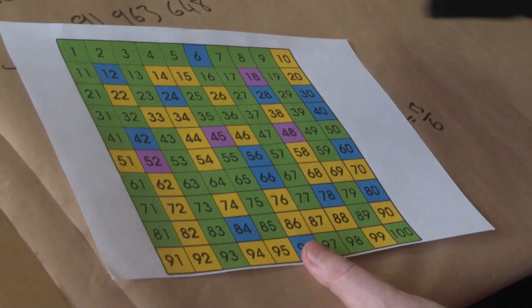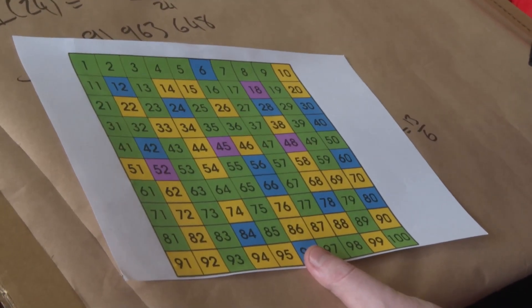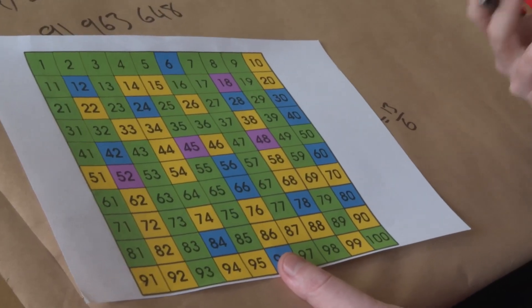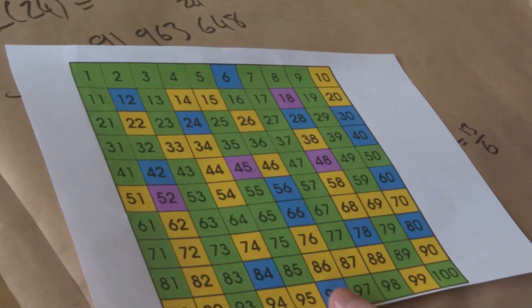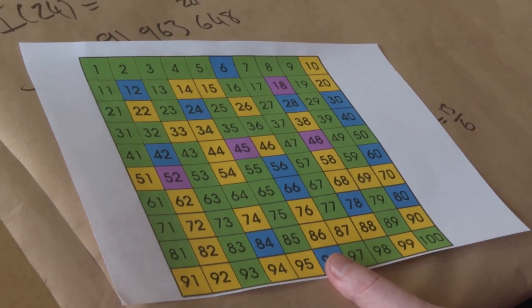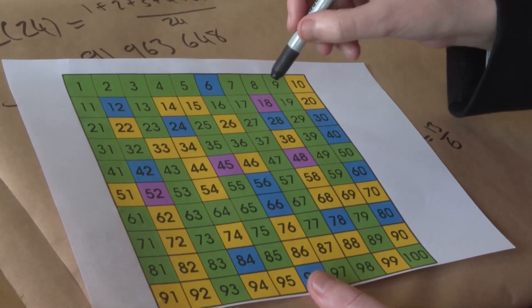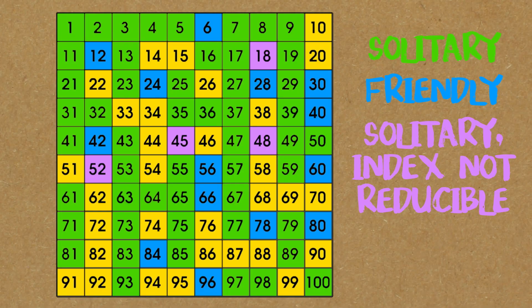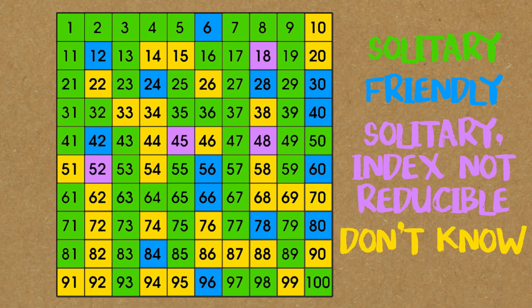Let me show you which numbers are solitary and which ones are friendly. The friendly numbers are marked in blue — 6 is a perfect number and we know that means it's friendly, along with 12, 24, and 28. The solitary numbers are marked in green: your primes, prime powers, and numbers that don't share factors with that sum. Some special ones — 18, 45, 48, 52 — are solitary but not prime, not prime powers, and don't have that special rule; we've worked that out by hand. But there are some numbers marked in yellow that we don't know if they are friendly or solitary.